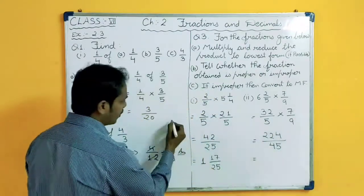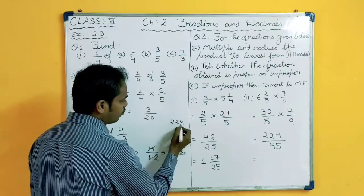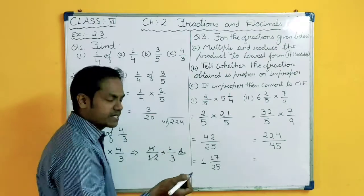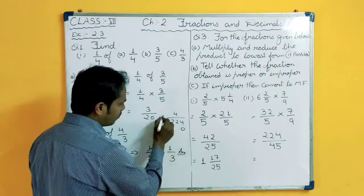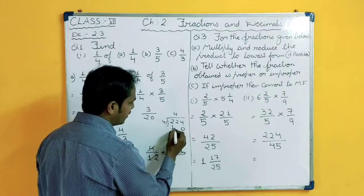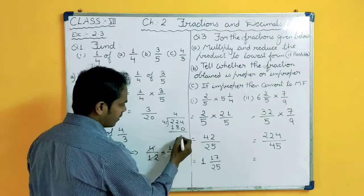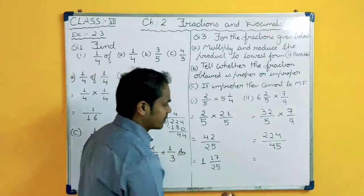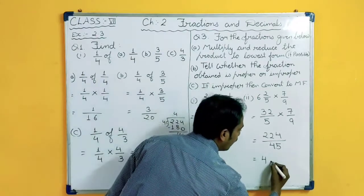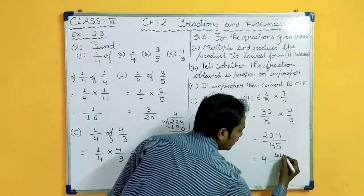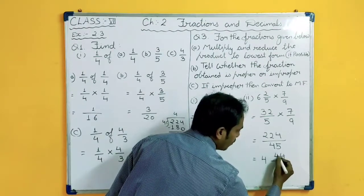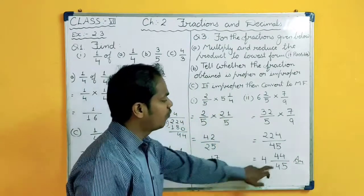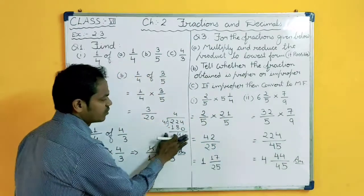Now 224 divided by 45. I am checking: 45 multiplied by 4 is 180, and 224 minus 180 is 44. So the quotient is 4 and remainder is 44. Your remainder is 44 upon 45. So the final answer is 4 and 44 upon 45.